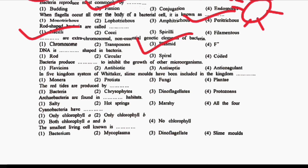Next question: DNA is DASH-shaped in bacteria. Option 1: Rod-shaped. Option 2: Circular. Option 3: Spiral. Option 4: Coil. The correct answer is Option 2, that is Circular.